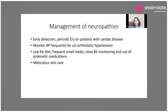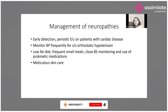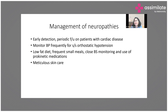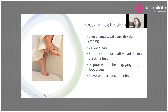Management of autonomic neuropathy involves early detection and periodic follow-up, especially for cardiac disease. If orthostatic hypotension is present, blood pressure should be checked frequently. For gastrointestinal symptoms, advise a low-fat diet with frequent smaller meals to manage early satiety, and monitor blood sugars more strictly. Prokinetics can also be used. Skincare is very important since dry skin is a common feature — advise patients to use moisturizers to keep skin soft.